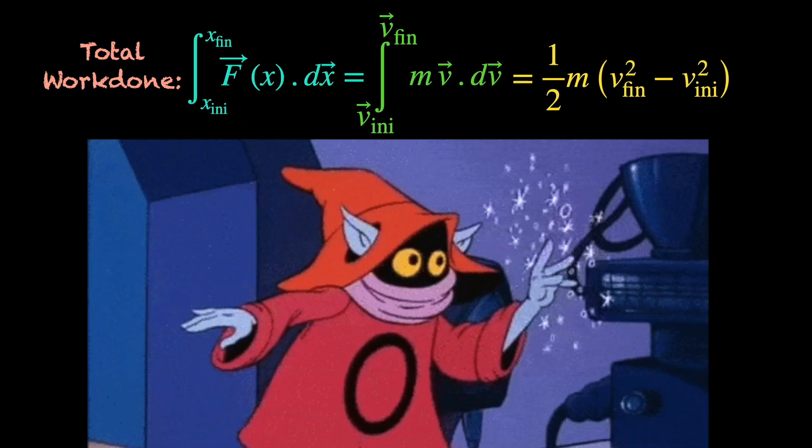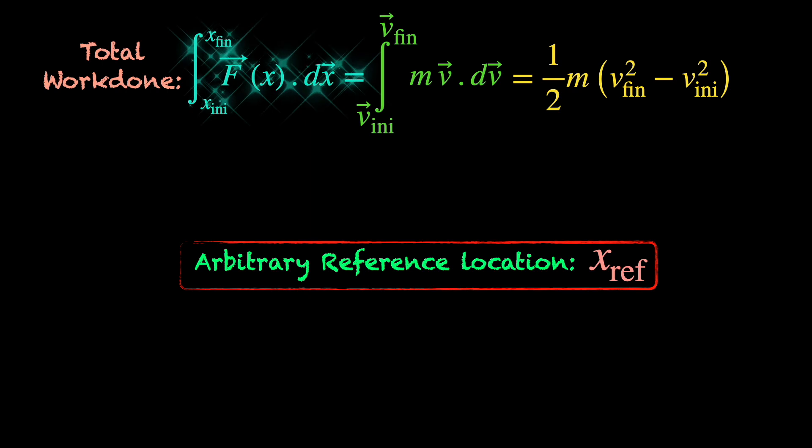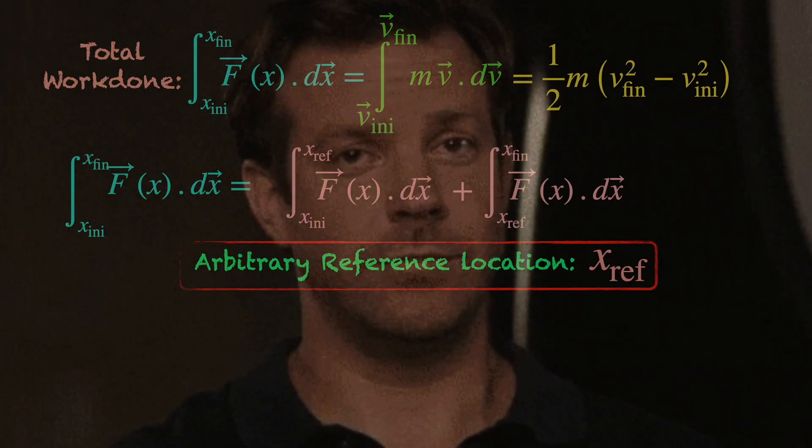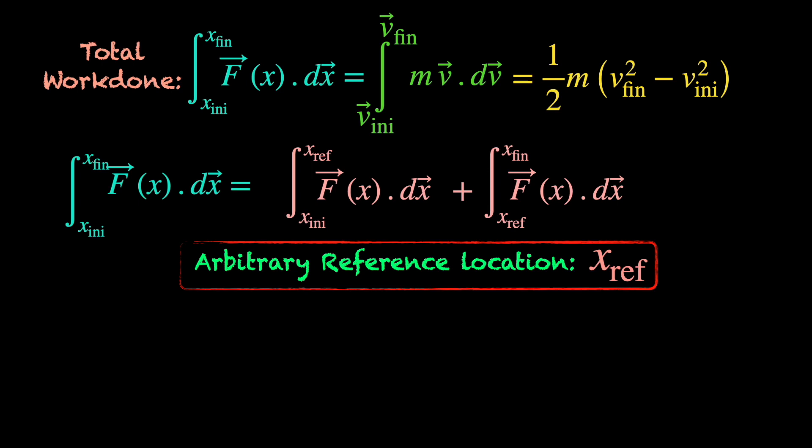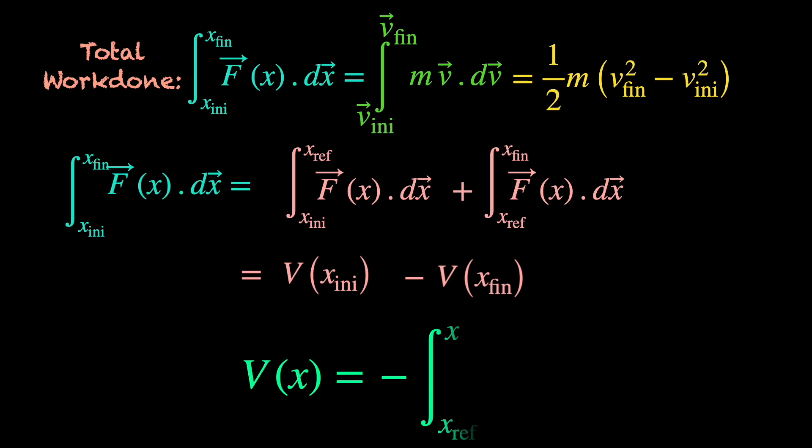Now comes a little party trick. We bring in an arbitrary reference location point x reference and break the work done integral f dot dx into two parts: an integral f dot dx from x initial to x reference plus another from x reference to x final. We can choose this x reference for a particular physical problem. What this does is, now we can write these two integrals as a function v of x evaluated at the two terminal locations x initial and x final.